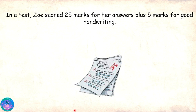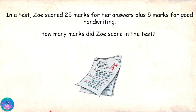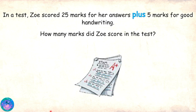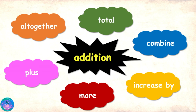And here is one more situation. In a test, Zoe scored 25 marks for her answers plus 5 marks for good handwriting. How many marks did Zoe score in the test? So, she scored 25 marks plus 5 marks. The keyword here is 'plus,' which tells us that we have to bring together 25 marks and 5 marks. Very good, Sam. So, 'plus' is yet another keyword for addition.